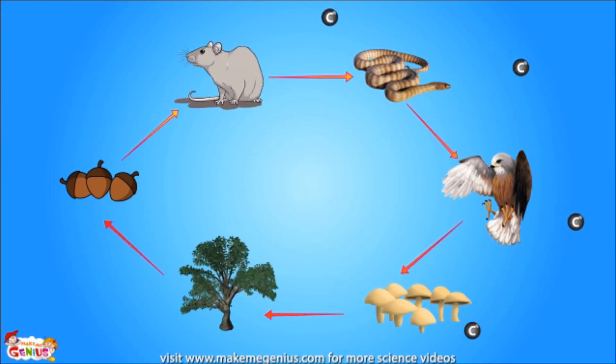Then, bigger animals eat smaller ones, and carbon keeps on moving from one body to another.